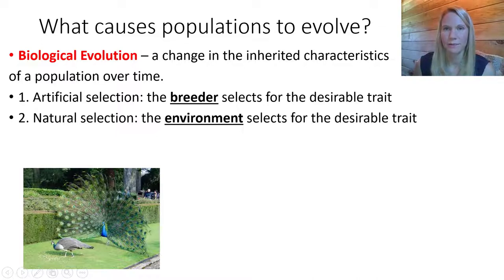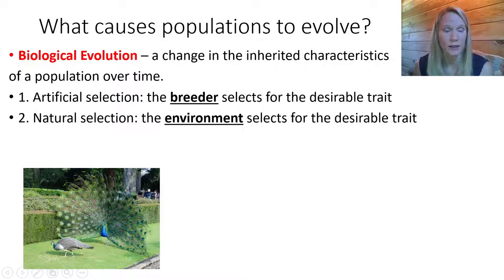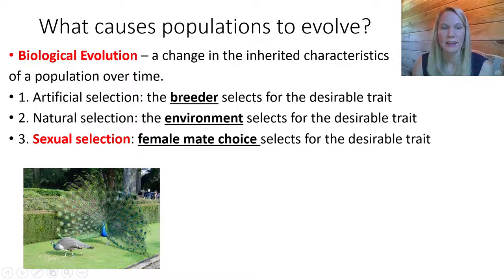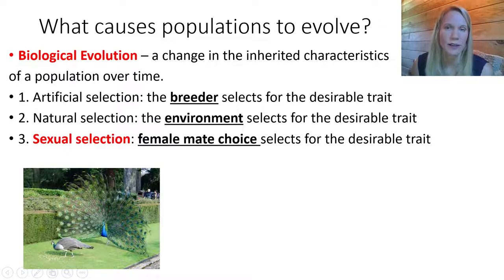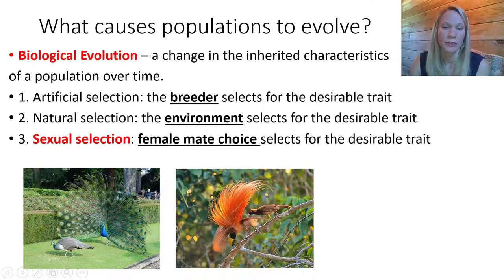Darwin noticed that in nature, especially in certain animals, males tended to be more brightly colored than females — this really stands out in birds. This helped him develop a third mechanism for how evolution can work, which he called sexual selection. Sexual selection implies that females in a species can actually choose which males they want to mate with, and they often choose males that are more brightly colored. We call this pattern sexual dimorphism.